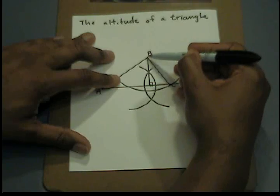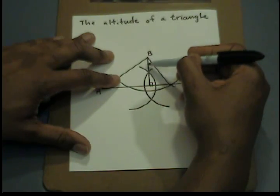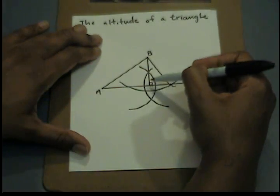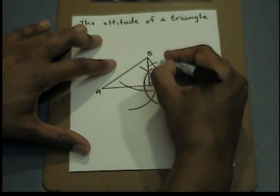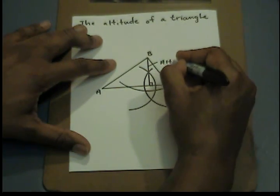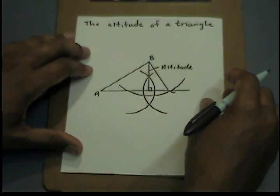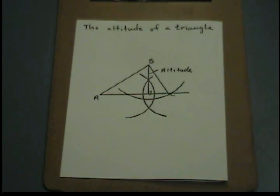So this line that goes from B through the arcs where both arcs intersect and down to AC is my altitude. And that is how we construct an altitude of a triangle.